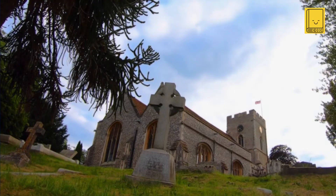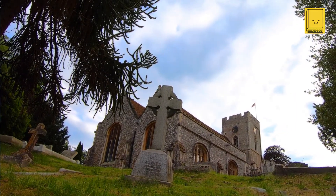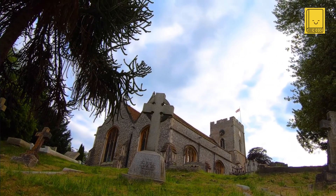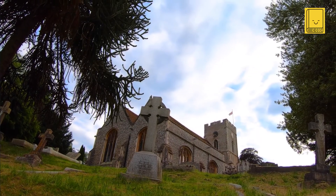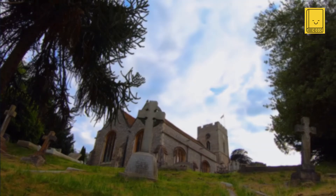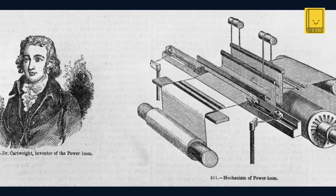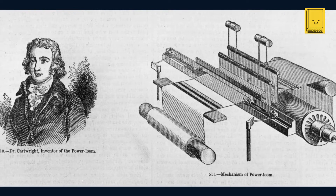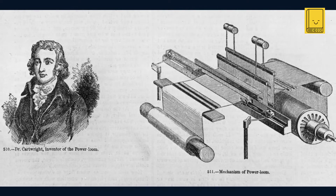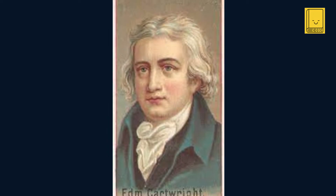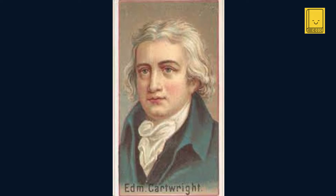After completing his education, Cartwright initially followed a traditional path suited to his social standing, taking holy orders in the Church of England in 1779. He served as a clergyman for several years, a role that, while respectable, did not fully engage his inventive and mechanical interests. It was not until later in his life, spurred by the burgeoning innovations of the Industrial Revolution, that Cartwright's interest in mechanical inventions truly flourished. His upbringing, education, and family wealth provided a foundation that allowed him the freedom to explore and contribute significantly to the technological advancements of his time.